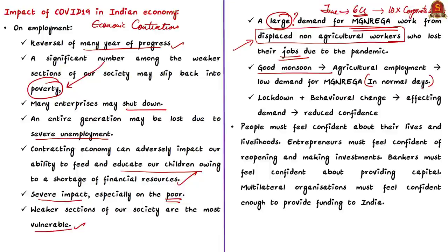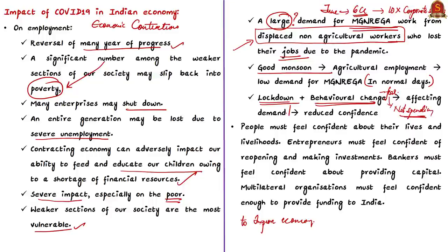People are now losing hope in the system due to severe unemployment. The authors say it is very important to act with utmost urgency to improve the economy. They also note that the slowdown in economic activity is not just because of lockdown but also because of behavioral changes of people driven by fear. Many people fear losing employment due to COVID-19, so they are not purchasing more, which causes demand to fall and affects market confidence.